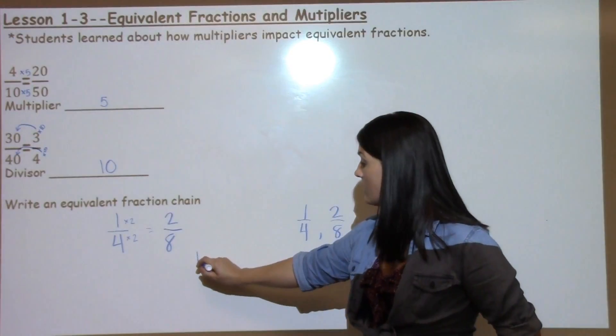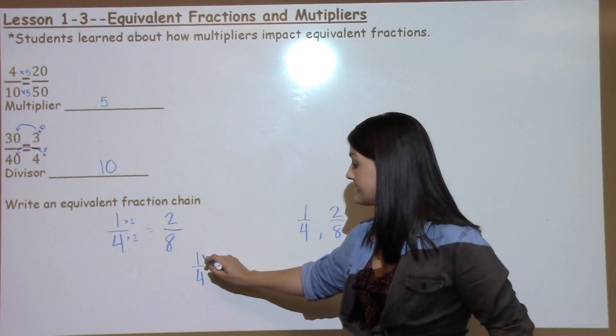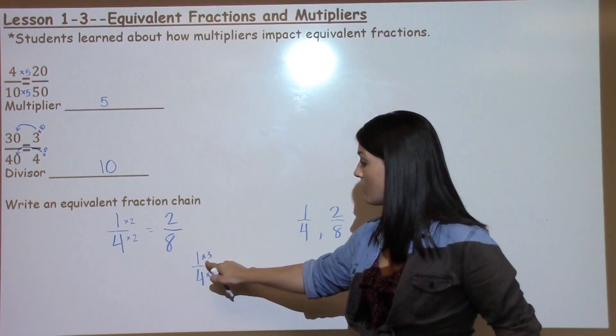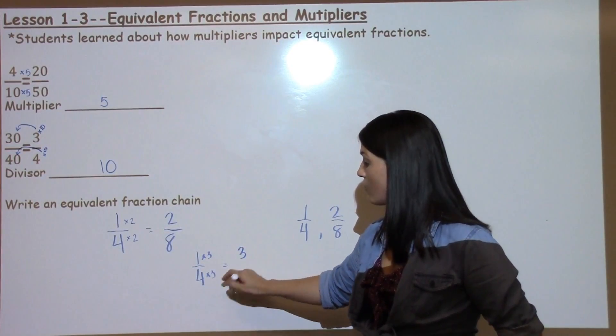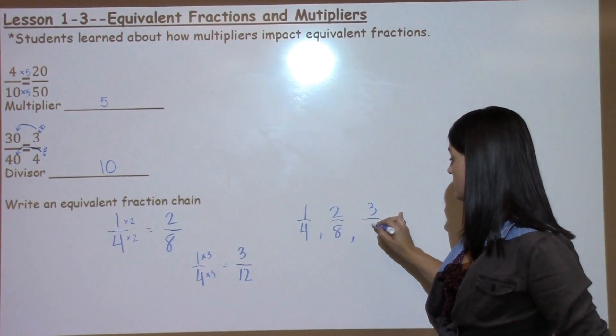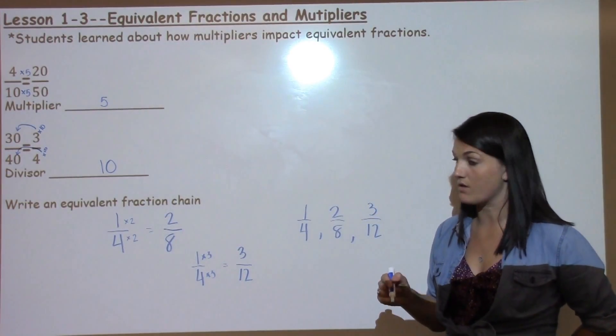They could then take 1 fourth and multiply the top by 3 and the bottom by 3: 1 times 3 is 3, 4 times 3 is 12, to show that 3 twelfths is also part of the equivalent fraction chain.